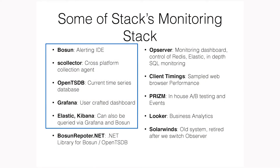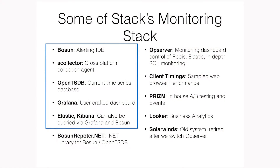Some of Stack's monitoring — which I'm not going to fully cover because I just don't have time — includes Bosun, which is basically an IDE for alerting. We built an agent called S-Collector; the reason we built our own agent is that Windows and Linux are both first-class systems in our environment, so we needed monitoring support for both in a single agent. We currently use OpenTSDB, and then Grafana for user-crafted dashboards, Elastic Kibana, and other stuff.